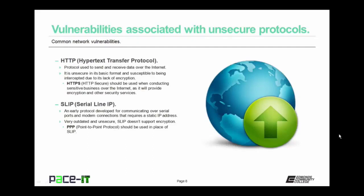Everyone's fairly familiar with HTTP, or Hypertext Transfer Protocol — the protocol used to send and receive data over the internet. It is unsecure in its basic format and susceptible to being intercepted due to its lack of encryption. HTTPS, or HTTP Secure, should be used when conducting sensitive business over the internet, as it provides encryption and other security services. Hopefully your network doesn't use Serial Line IP, or SLIP — it's an early, very outdated and unsecure protocol that does not support encryption. Point-to-Point Protocol, or PPP, should be used in its place as PPP does support encryption and is much more secure.